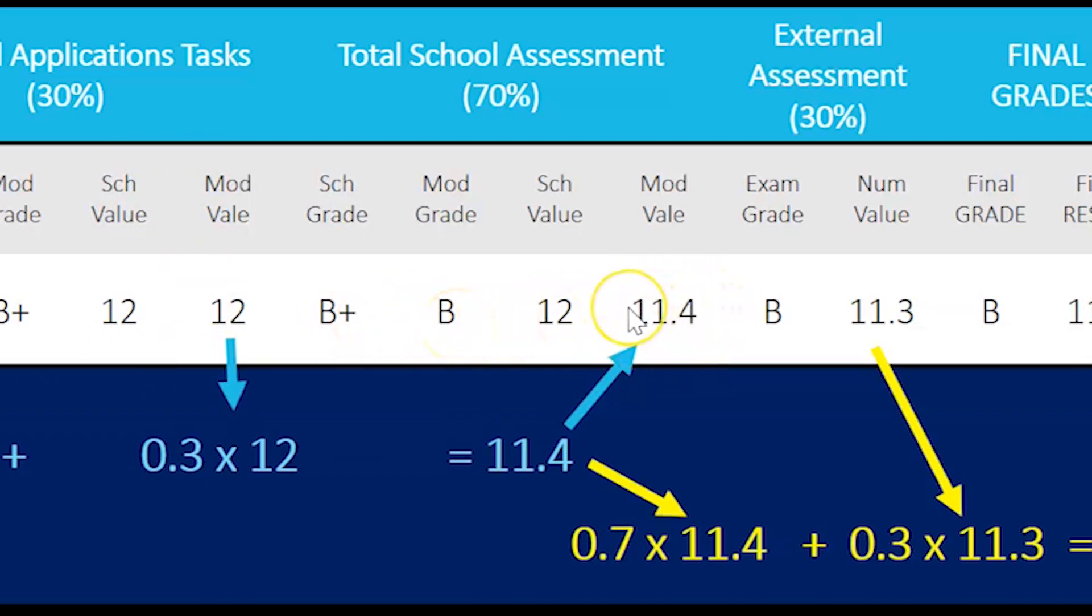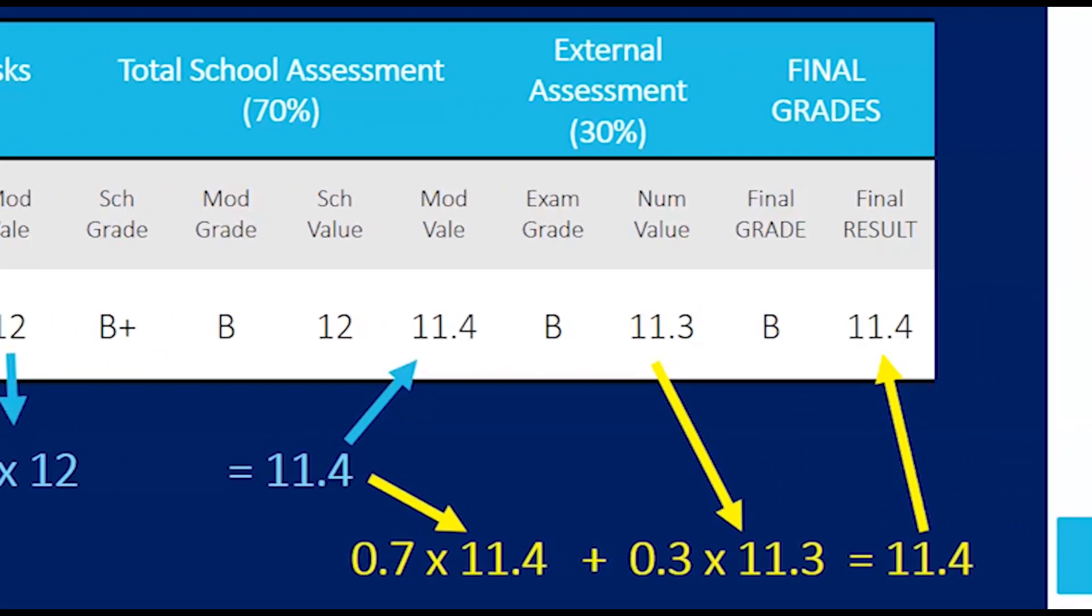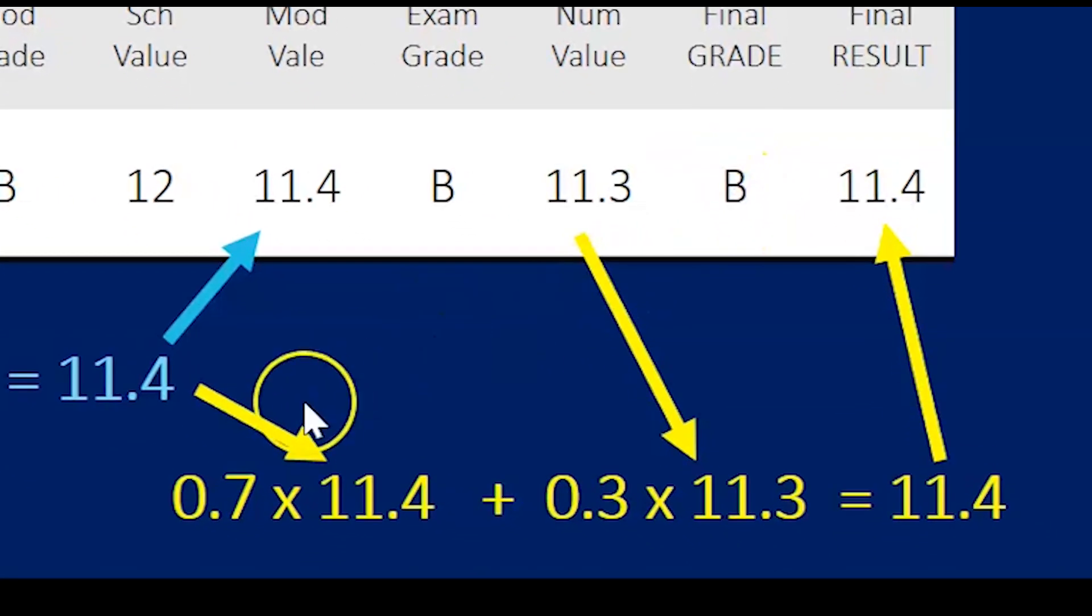You then sit your exam, or it might be a subject that has an investigation. Let's say you get a B for that as well. You get a numerical value of 11.3 based on the score that you got in that exam or that investigation. That gives you a final grade overall of B.